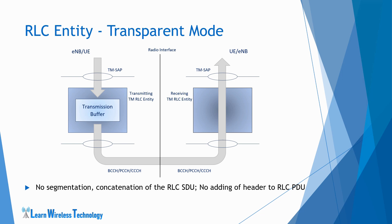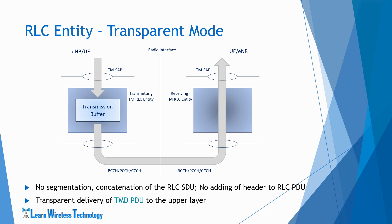When the receiver receives the PDU, it is delivered to the upper layer transparently — a transparent delivery of the RLC SDU takes place at the receiving end. The transmission buffer at the transmitting side is used to buffer the incoming RLC SDUs from the upper layers before being transmitted further. The PDU transmitted by this transparent mode RLC entity is referred to as a TMD PDU.